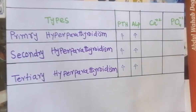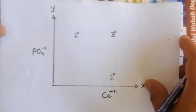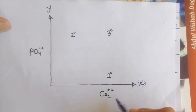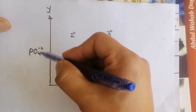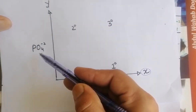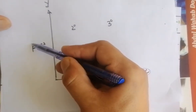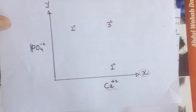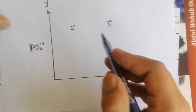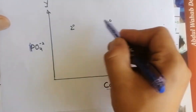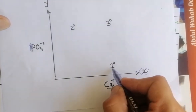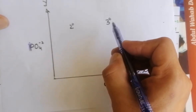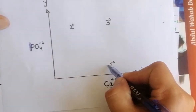For the level of calcium and phosphate, we have this trick to remember. This is a graph on which the x-axis represents calcium level and the y-axis represents phosphate level. As phosphate has a single vertical line, it is represented on the y-axis. Write first, second, and third in this table in this pattern — first for primary hyperparathyroidism, second for secondary, and third for tertiary hyperparathyroidism.